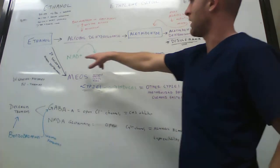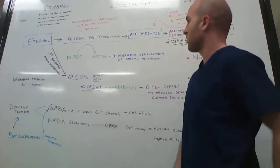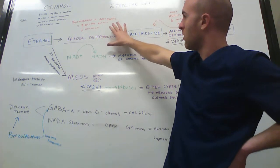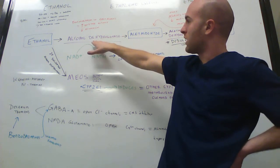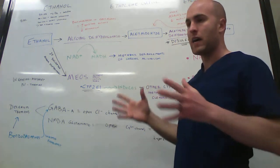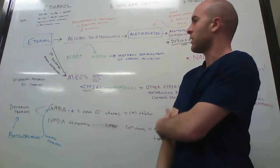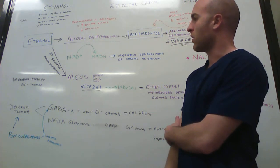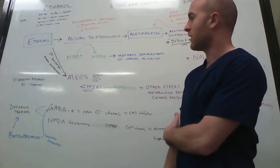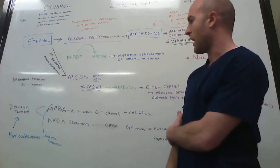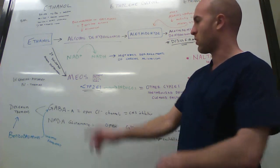So if somebody just drinks a whole bunch of alcohol, and this alcohol dehydrogenase becomes totally saturated, in other words, all the enzymes being used, and there's still excess ethanol, your liver will kick in this system called the Microsomal Ethanol Oxidizing System, or MEOS.